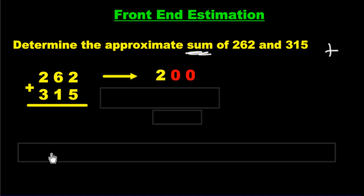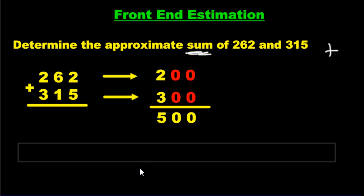262 becomes 200. 315, 300. We're just keeping the front number and we're just adding them now. We're going to add them and we get 500. But here's my question to you.